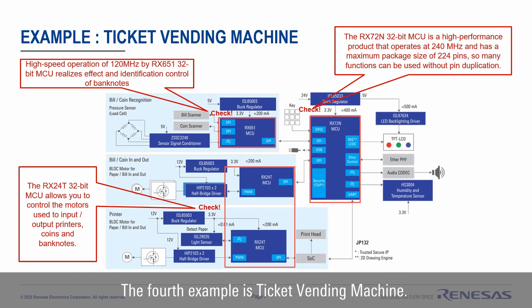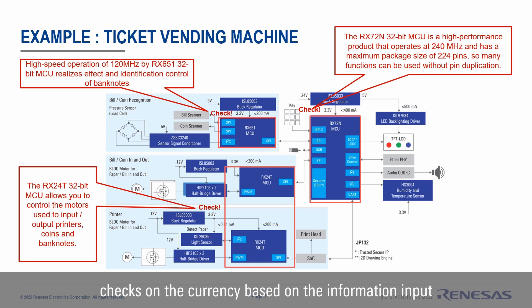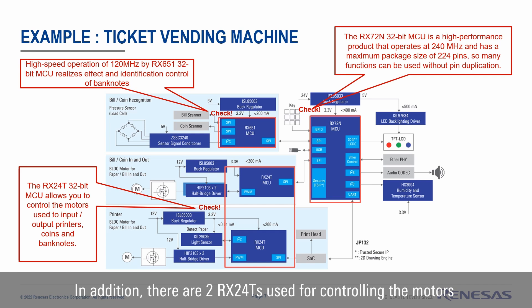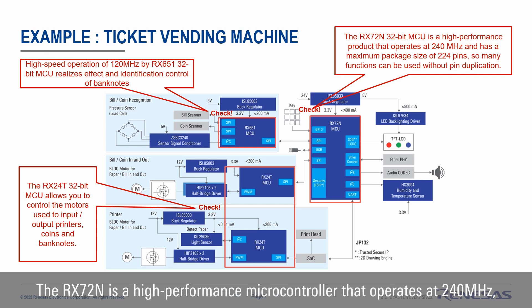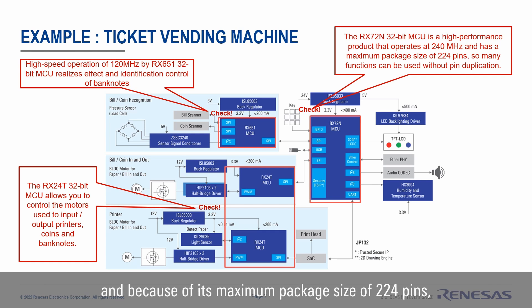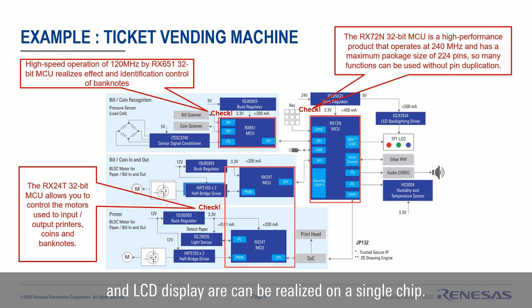The next application example is the ticketing vending machine. Four RX microcontrollers are used here. In the currency software, the RX651 operates at a maximum of 120MHz and checks the currency based on information input from dedicated IPs and sensors. In addition, there are two RX24T MCUs used for controlling the motors in the input and output units of the printers, coins, and bank notes. The RX72M is a high-performance microcontroller operating at 240MHz, and because of its maximum package size of 224-pin, many functions such as ticket operations, voice guidance, and LCD display can be realized on a single chip.